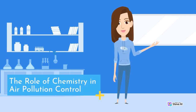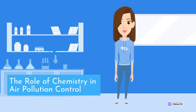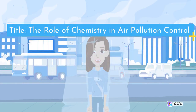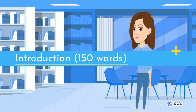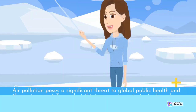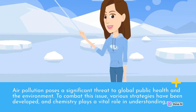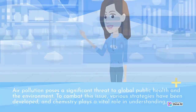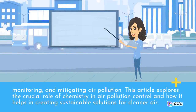The Role of Chemistry in Air Pollution Control. Air pollution poses a significant threat to global public health and the environment. To combat this issue, various strategies have been developed, and chemistry plays a vital role in understanding, monitoring, and mitigating air pollution. This article explores the crucial role of chemistry in air pollution control and how it helps in creating sustainable solutions for cleaner air.